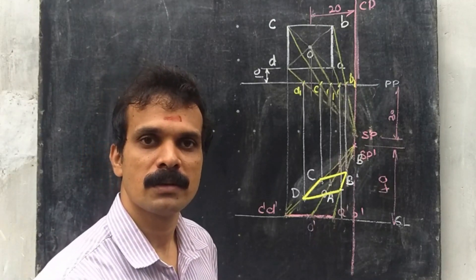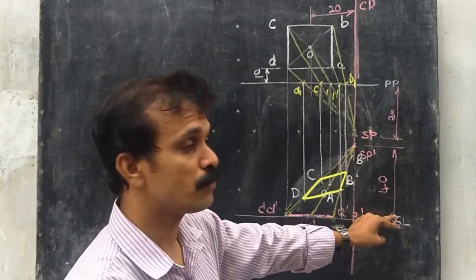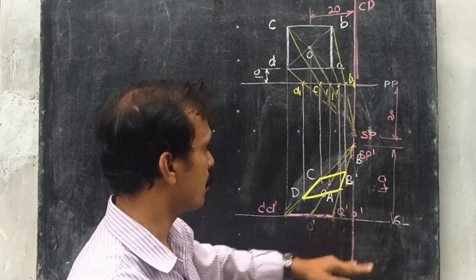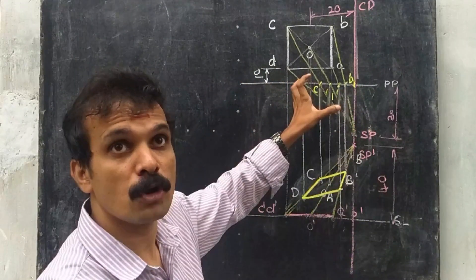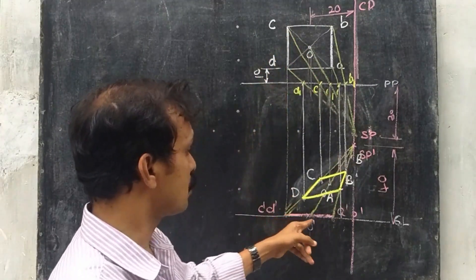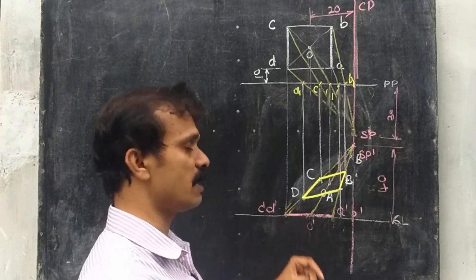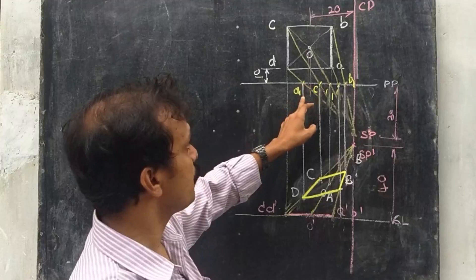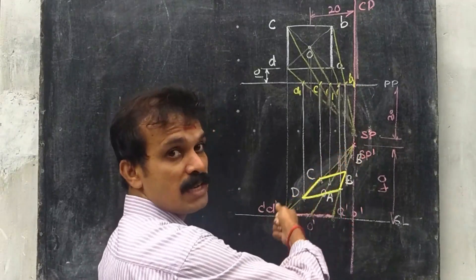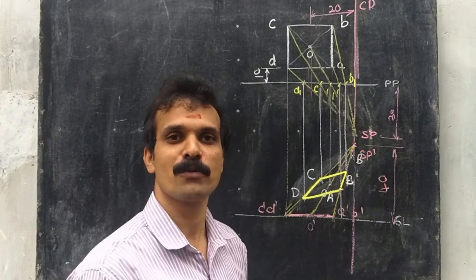To summarize the method: first draw the picture plane and ground line at a distance greater than the sum of SP height and SP front distance — here greater than 70. Draw the top view with the square 10 mm behind the picture plane, naming it ABCD. Project the front view and name it A dash B dash C dash D dash. Locate SP and SP dash. Connect SP with ABCD in the top view; where these lines pierce the picture plane mark them A1 B1 C1 D1. Connect SP dash with A dash B dash C dash D dash. Draw perpendiculars from the piercing points to intersect those connections, naming the results A B C D, and connect them to get the perspective projection.